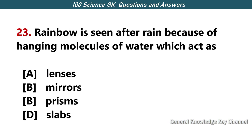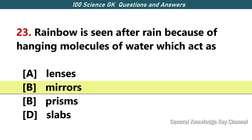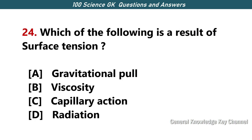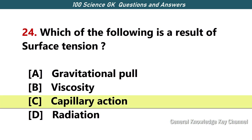A rainbow is seen after rain because of hanging molecules of water which act as — Answer B — mirrors. Which one of the following is the result of surface tension? Answer C — capillary action.